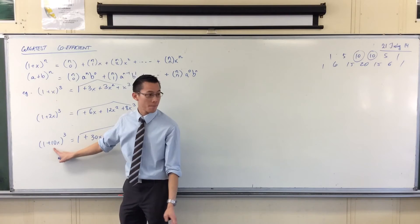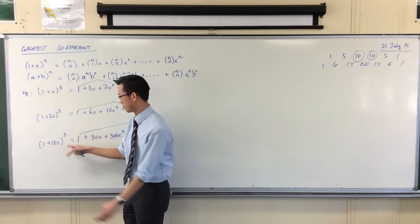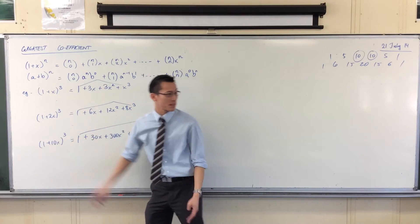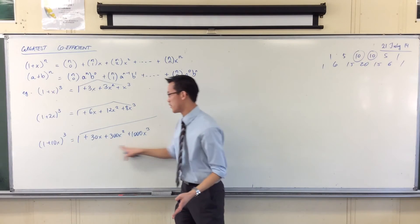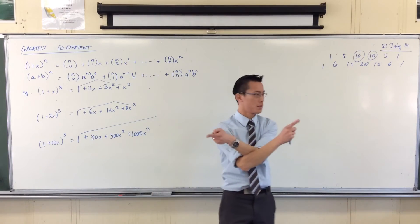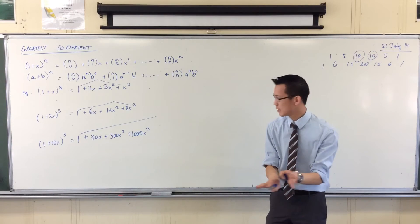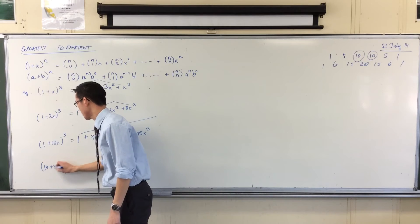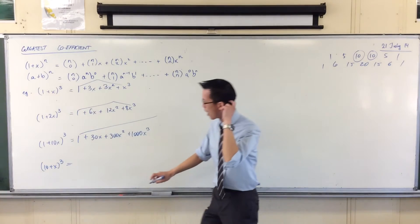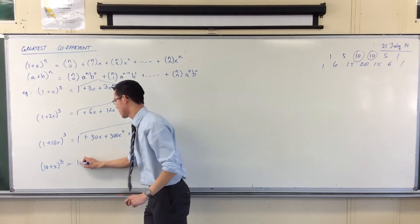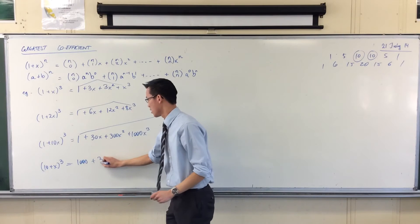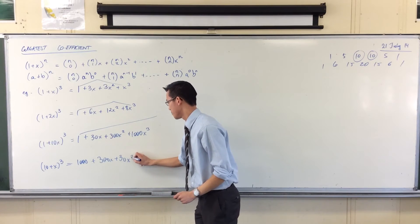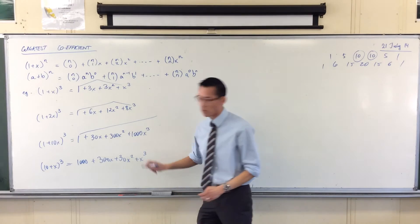And you can probably imagine, if I change, instead of this number, if I change this number, it would lean the other way. If my first number was, say, 10, if I did 10 plus x all cubed, then these coefficients would be exactly backwards. Let's put that example down. It'll be the same as this, but 1,000 here, 300 here, 30, and then 1 lot of x cubed.